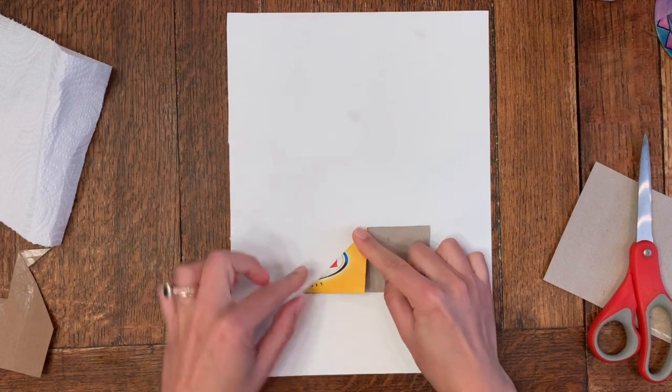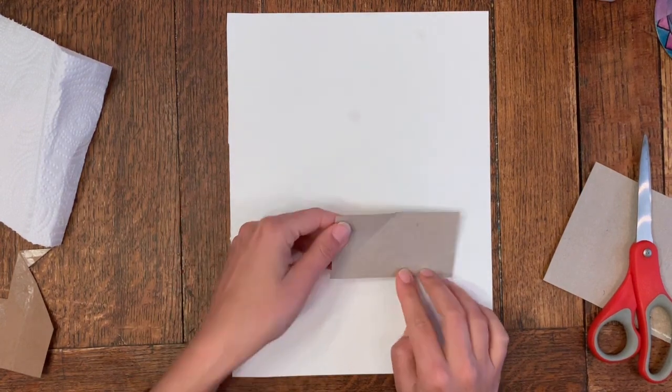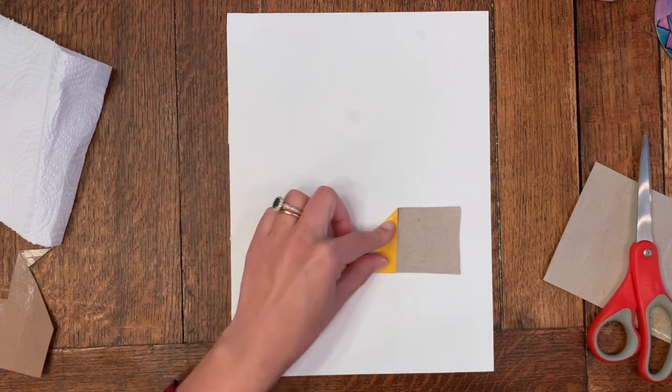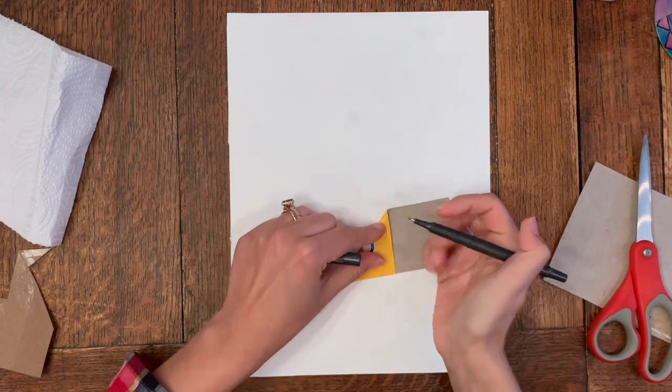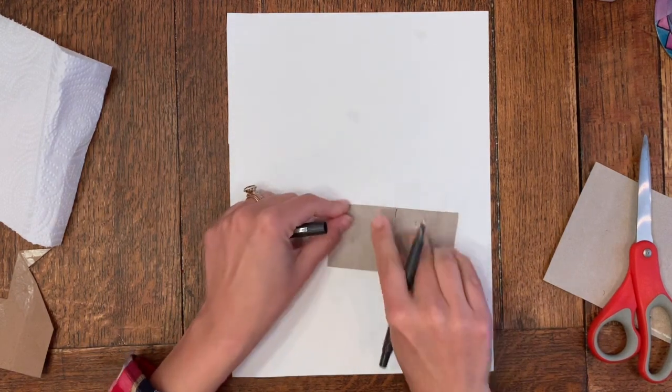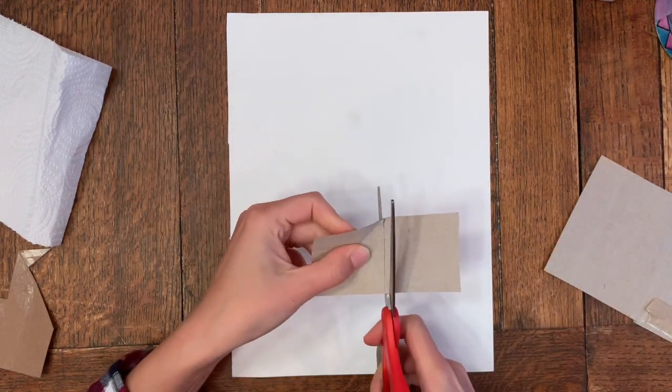I made sure that this corner touches the bottom and it's straight across there. I'm going to take a pencil or a pen, whatever you have around, and draw a line. That's creating my square. Then I'm going to cut the square.